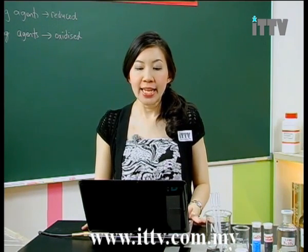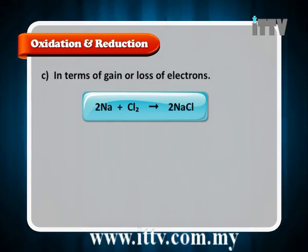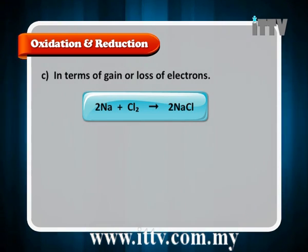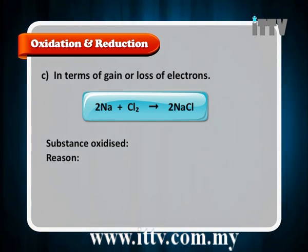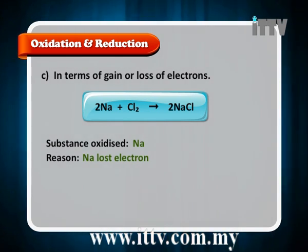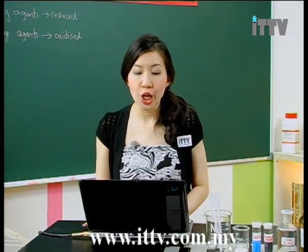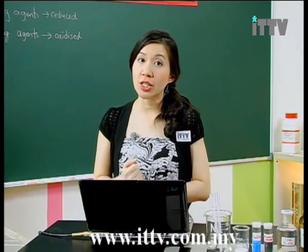Now let us look at the third parameter to define oxidation and reduction processes — in terms of gain or loss of electrons. For example, we have sodium reacting with chlorine to produce sodium chloride salt. The substance being oxidised is none other than sodium, because sodium has lost electrons. To better understand this, let us look at the board for a deeper understanding of how gaining or losing electrons defines oxidation and reduction.